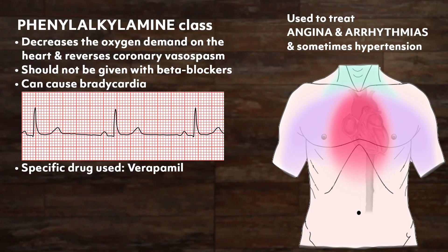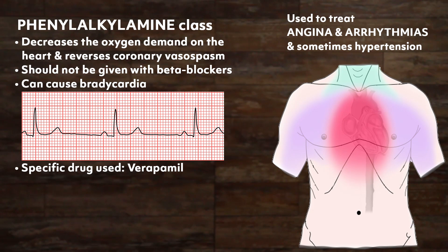The phenylalkylamine class of drugs are a non-dihydropyridine that decreases the oxygen demand on the heart and reverses coronary vasospasm — the sudden intense constriction of a coronary artery that can occlude the vessel. They are used to treat angina and arrhythmias. They cause less vasodilation and therefore less tachycardia, but can actually cause excessive bradycardia, impaired electrical conduction, and depressed contractility as side effects. Patients with any of these issues should not take non-dihydropyridine calcium channel blockers, and they should not be given with beta blockers, as beta blockers also depress cardiac mechanical and electrical activity.